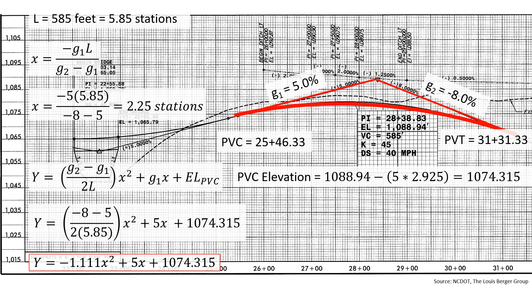So this means our high point occurs 2.25 stations from our PVC. So if we add this to our PVC station, we get the overall station location of our high point that occurs at 27 plus 71.33.